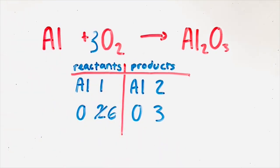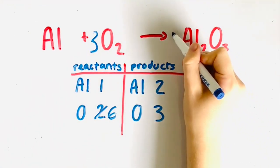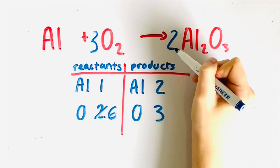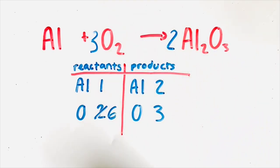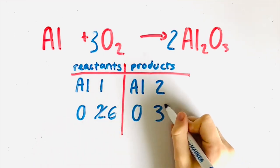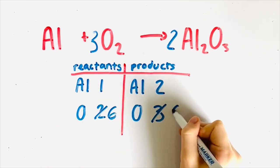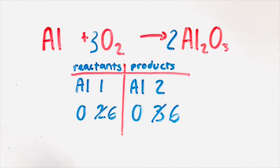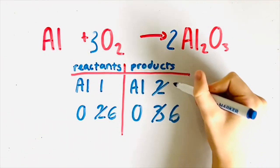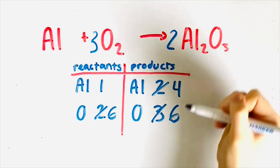Next, you would write a coefficient of two in front of the entire Al2O3 compound. This would not only give you six oxygen atoms because two times three is six, but it would also give you four aluminum atoms because two acts as the coefficient of aluminum as well, and two times two is four. You would cross out the three in the table and write a six. Now there are six oxygen atoms on both sides. You would also cross out the two next to the aluminum atom on the product side and write a four.